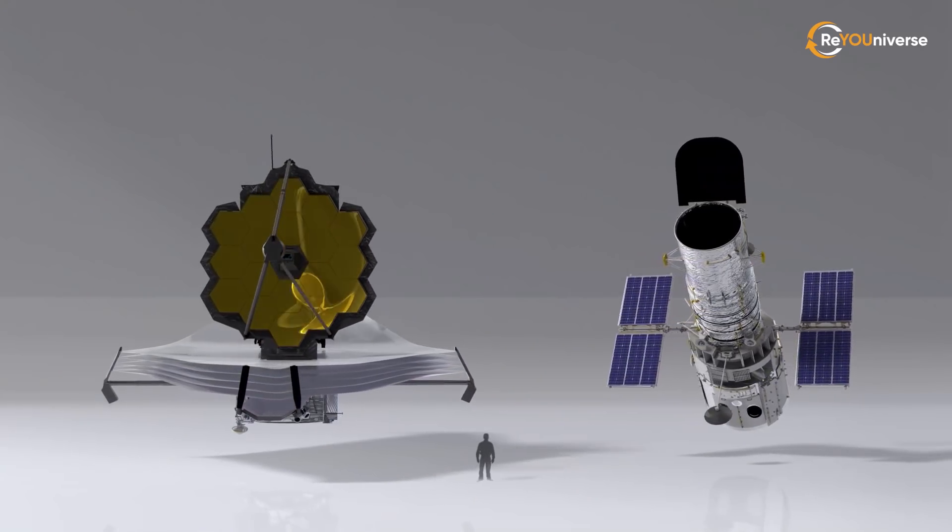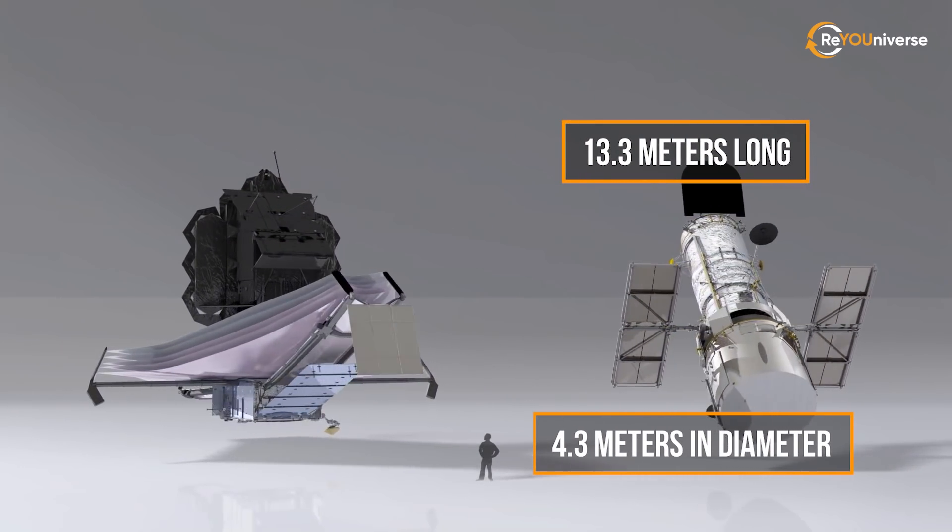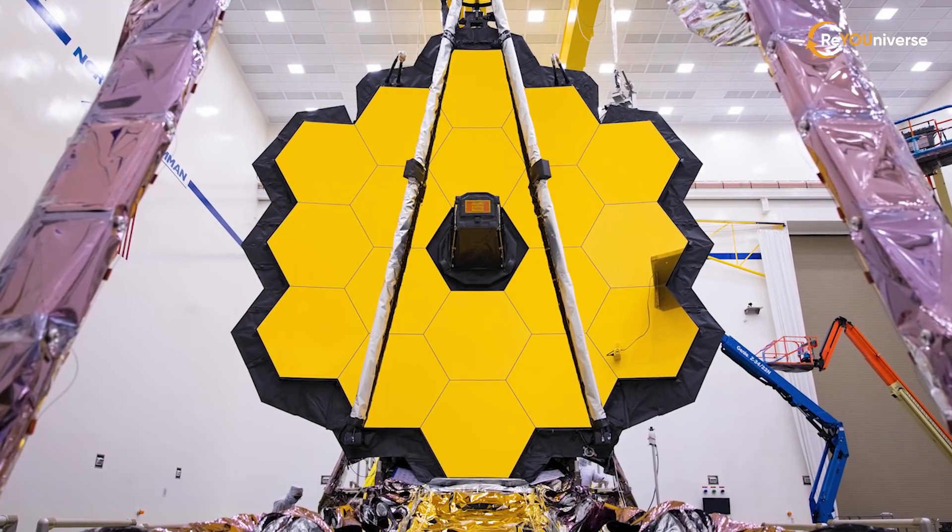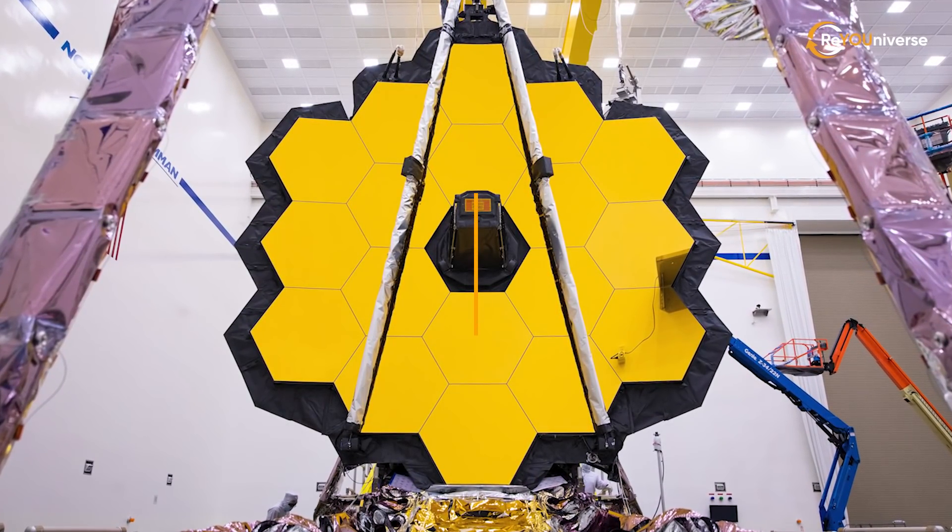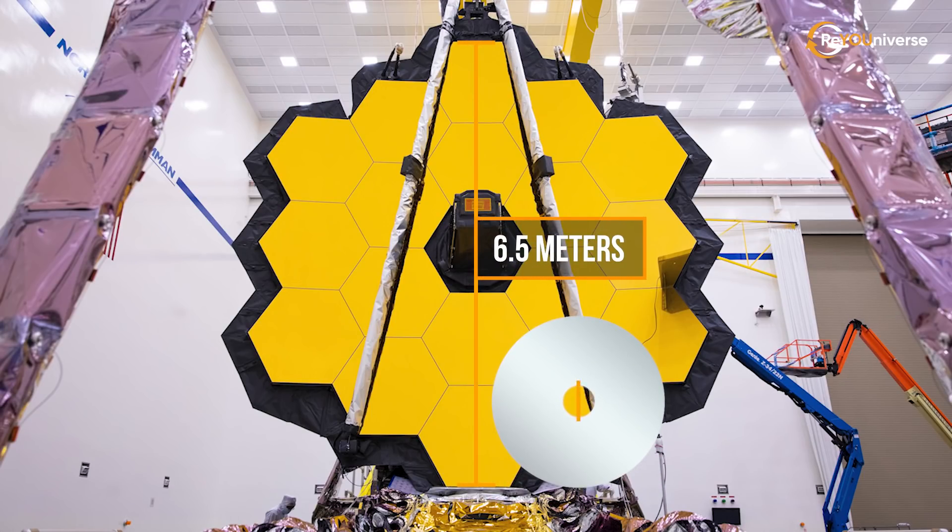By comparison, the Hubble telescope is 13.3 meters long and 4.3 meters in diameter without solar panels. The new telescope's mirror looks no less impressive. Its diameter is 6.5 meters. This is almost three times larger than that of Hubble, which has a mirror with a diameter of 2.4 meters.